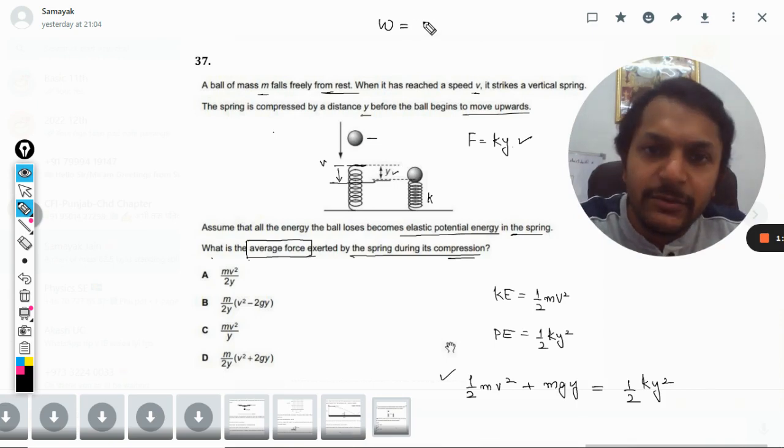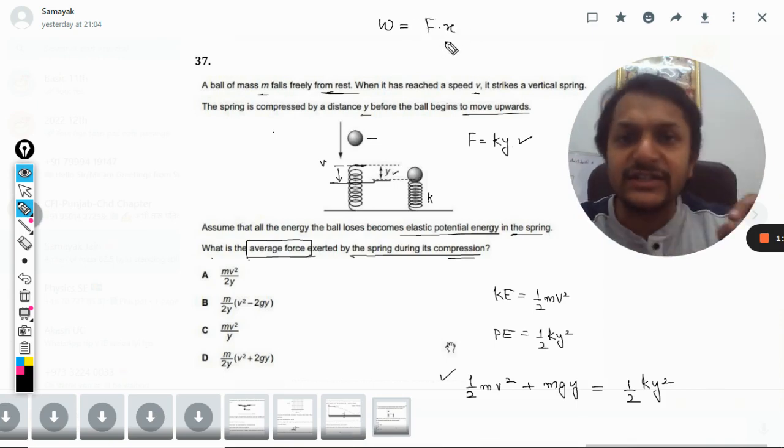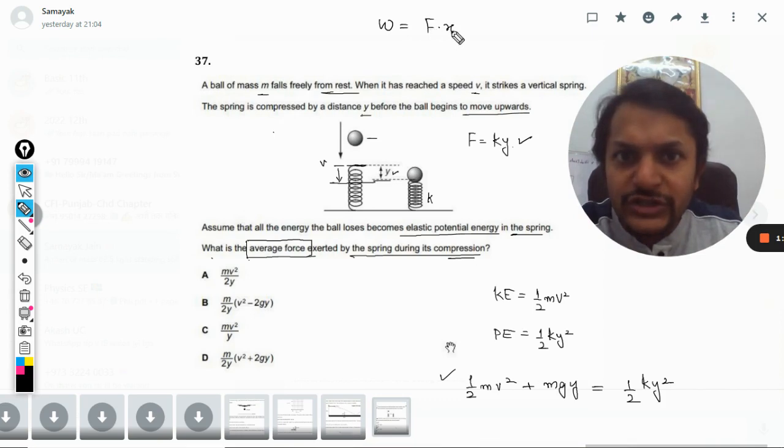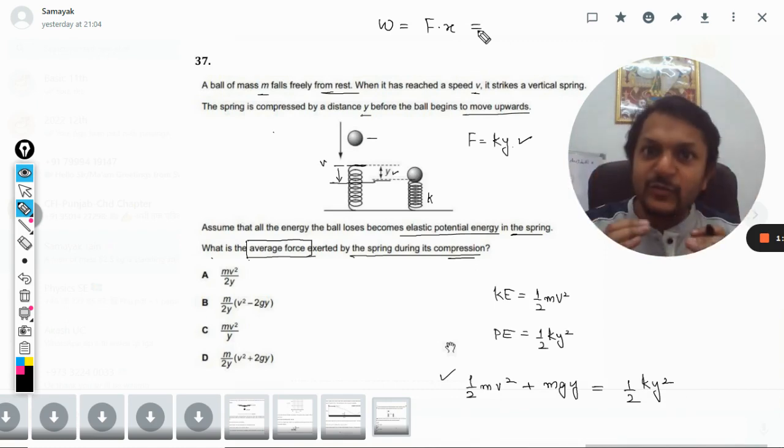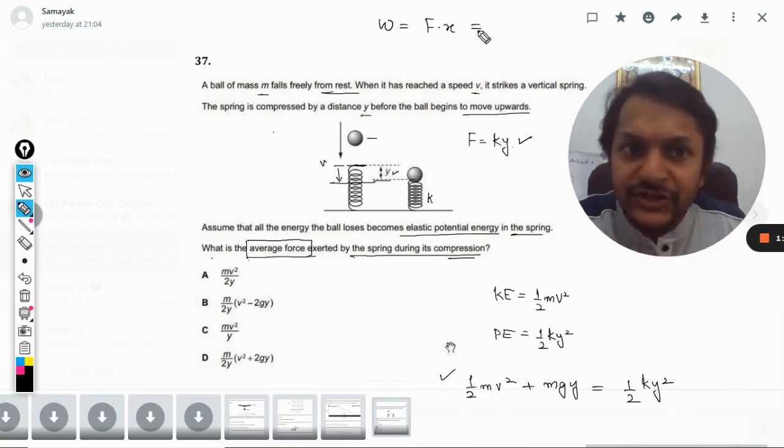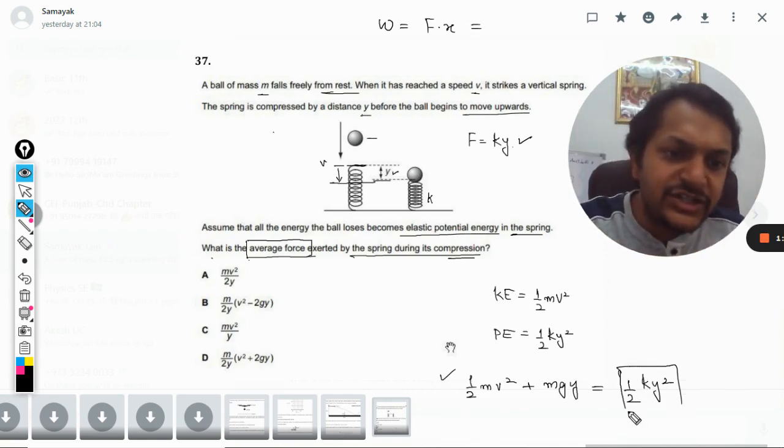Now the work done in compressing the spring is given by the force into distance. Now this is force and this is distance. So what happens is this work done in compressing the spring is now stored as the potential energy.